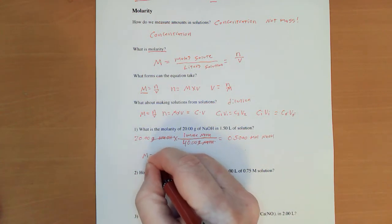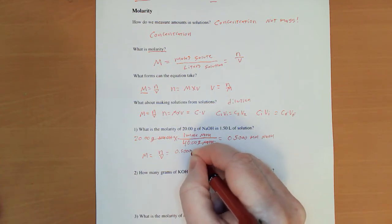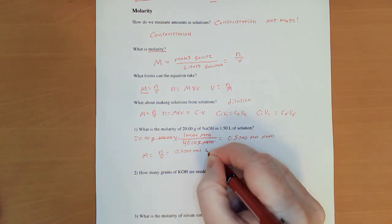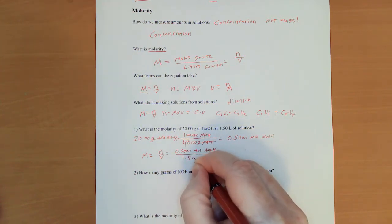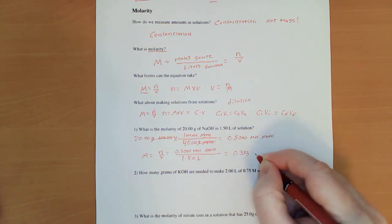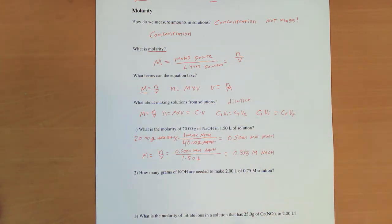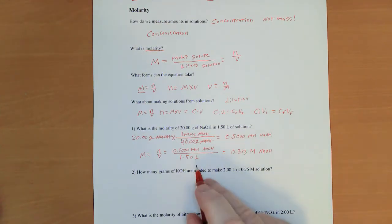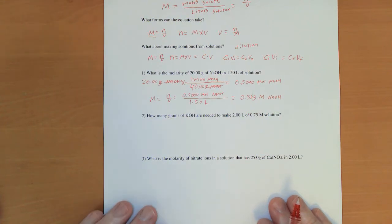So molarity equals n over v, which is 0.500 moles NaOH divided by 1.50 liters, which is 0.333 molar NaOH. And I've paid attention to sig figs here. The 1.50 limits me to 3 sig figs. Now, that is something that you might have to do.